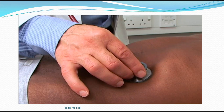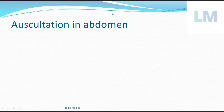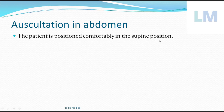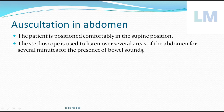Nobody will directly auscultate until they have done the first three steps: inspection, palpation, and percussion. When the patient is asked to lie supine, the procedure is explained and the diaphragm of the stethoscope is placed on the abdomen with gentle pressure, with the earpiece inside the ear canals of the doctor. The patient should be positioned comfortably in supine position — face facing upwards — and asked to strip until the region of the hips.